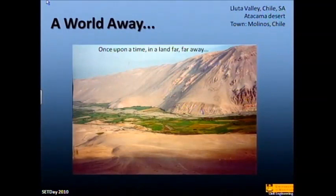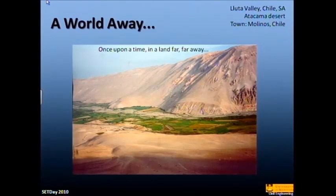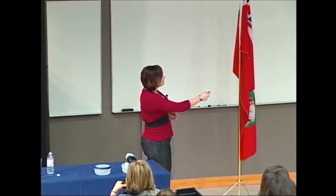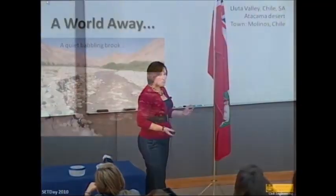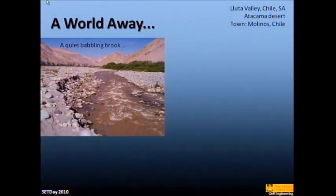I actually started out in environmental engineering and thought I wanted to be an environmental engineer and save the world in terms of water quality. But an experience I had in fourth year on my undergrad thesis actually changed my mind and changed the whole course of my future. This is the Juta Valley in Chile, South America. It's in the middle of the Atacama Desert, the driest desert in the world — it rains about once every 10,000 years. And it actually rained when I was visiting, which was really cool. I went here for my fourth year thesis project to look at water quality issues in the river, this green patch right in the middle of these desert mountains that services the village.